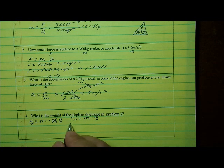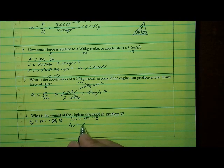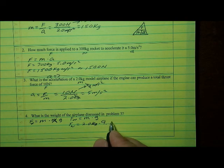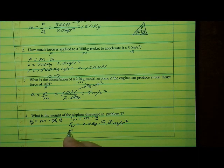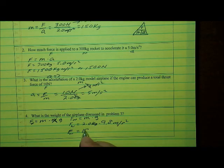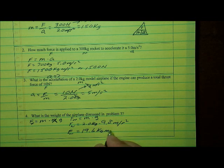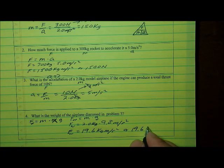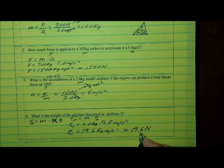If we plug some numbers in, the force of weight equals the mass — which is 2 kilograms for this model airplane — times 9.8 meters per second squared. That means the force of weight, the weight of this model airplane, is 19.6 kilogram meters per second squared, or 19.6 newtons. Roughly 20 newtons is the weight of that model airplane.